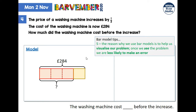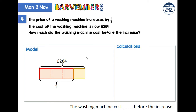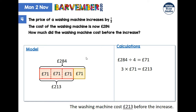The first calculation we're going to do is divide by four to find the value of each part, and then multiply by three to find the cost before the increase. So there you go — that's the end of the video solutions for day one of Barvember. I hope you found that useful. Make sure you have a go at the problems before watching the solutions, and email questions to your teacher if you're still struggling. See you tomorrow.